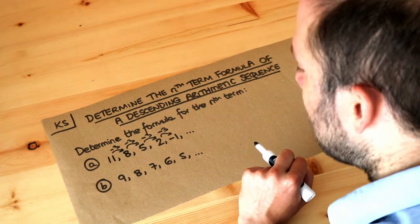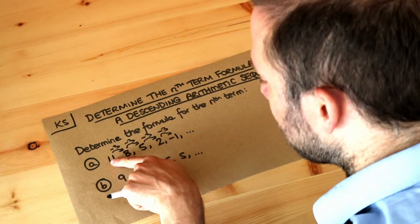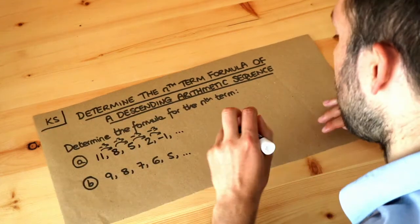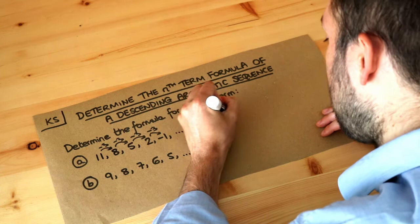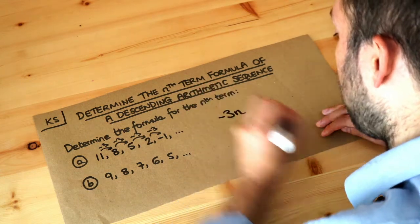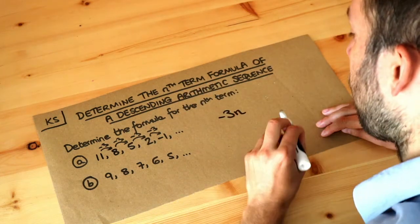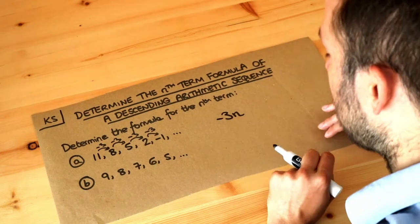So remember what we previously did. We said whatever the difference was between terms we take that number, in this case minus three, it's going to be a negative number, and just put that on front of an n. So we're going to start our nth term formula as minus three n.